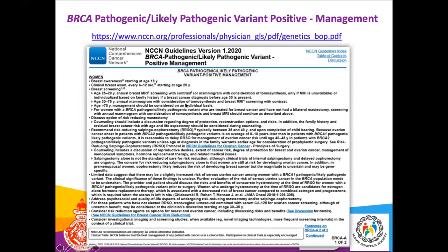When a patient has a pathogenic or likely pathogenic mutation in BRCA1 or 2, they need close follow-up using NCCN guidelines, which cover four different tumor types. For breast cancer, the guidelines specify at what age to start screening, how often to screen, and what type of follow-up — whether ultrasound, mammography, or MRI. These are the guidelines we normally follow.